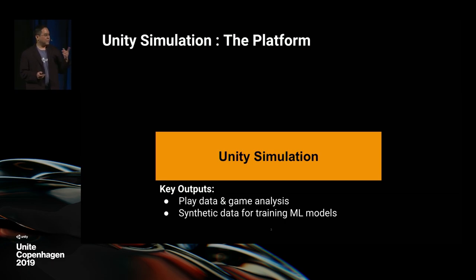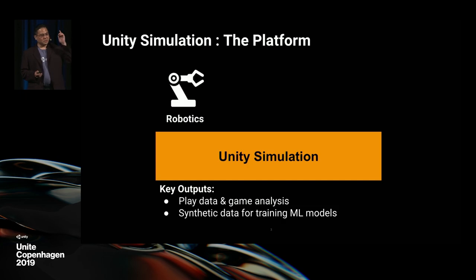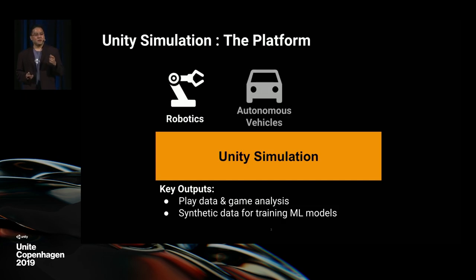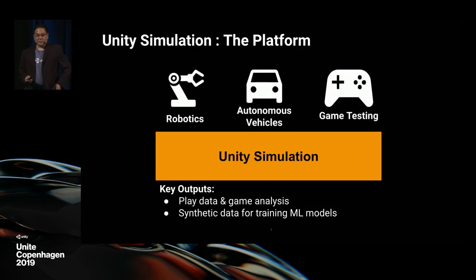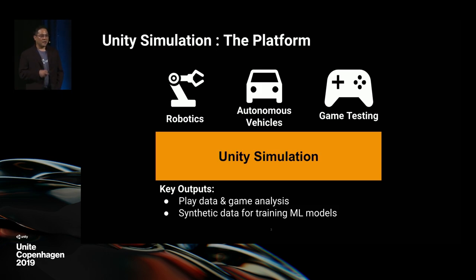We'll talk to you today about three primary use cases that we found during our Alpha product, which is robotics, autonomous vehicles, and game testing. Then I'll hand it over to Vlad to talk about how we generate synthetic data, how our service works, and give you a brief demo of what we built.